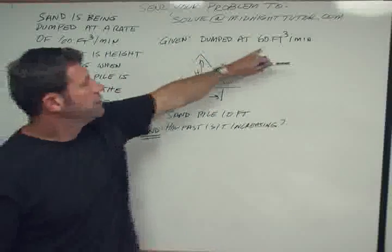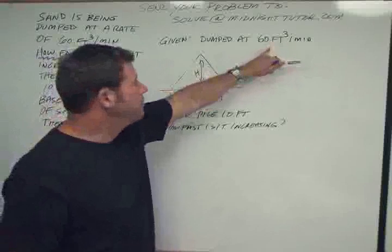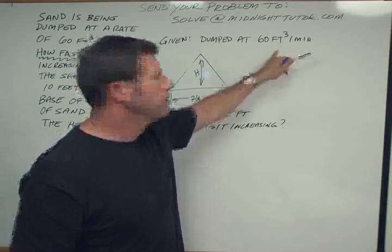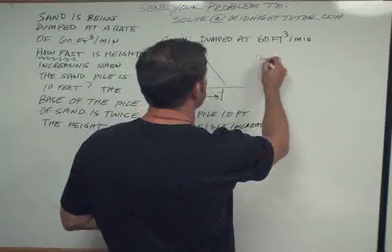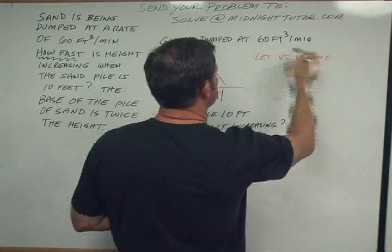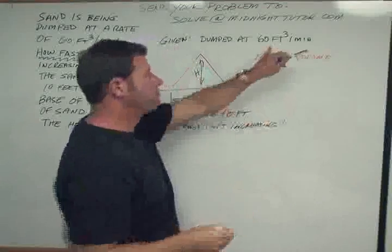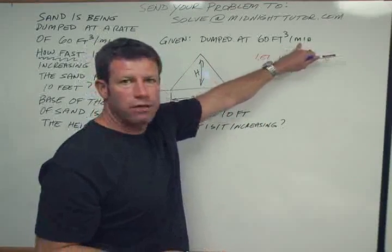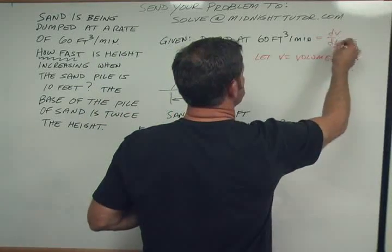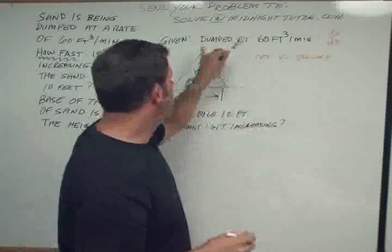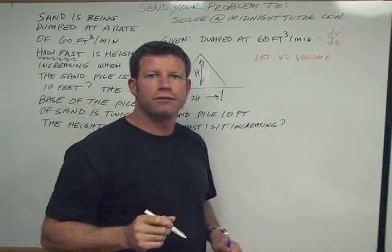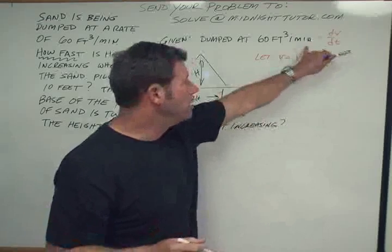Notice that 60 cubic feet per minute, 60 cubic feet is a unit of measure of a volume, right? So if I were to say let V equal volume, then this is going to be, since it's volume per minutes, volume per time, this is going to be equal to dV/dt. Now, it appears to be constant, right? It doesn't say that the rate that the sand is being dumped changes over time, so this is always going to be the case.